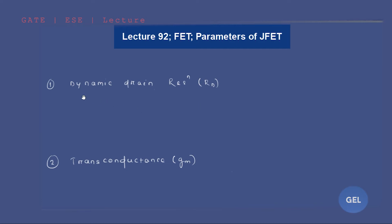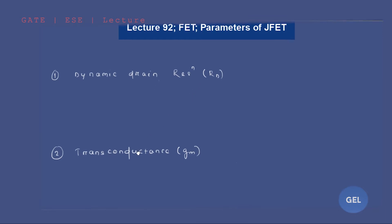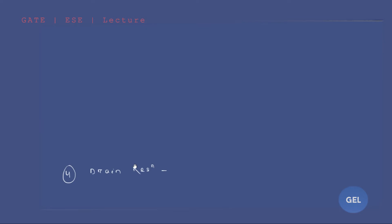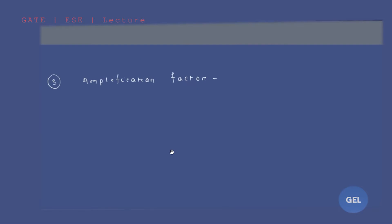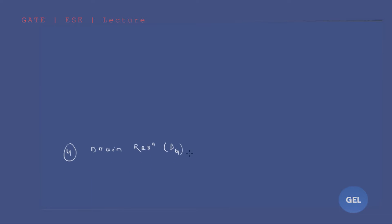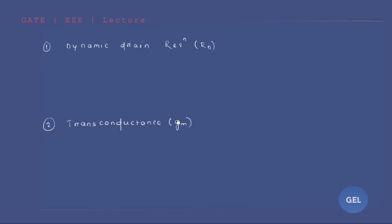The four important parameters are: dynamic drain resistance, transconductance, amplification factor, and drain resistance. The amplification factor is represented as mu (μ), drain resistance as rd, transconductance as gm, and dynamic resistance as rd.